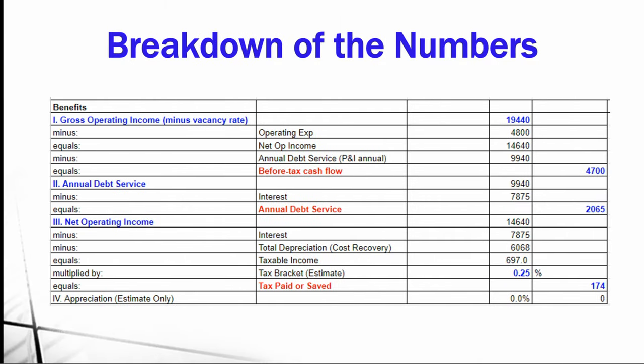Breaking down the numbers: gross income is $19,440. Rent is $1,800 × 12 = $21,600, but applying the 10% vacancy rate gives 90% of that, equaling $19,440. Operating expenses — insurance plus taxes — total $4,800, giving a net operating income of $14,640. Annual debt service is $9,940.